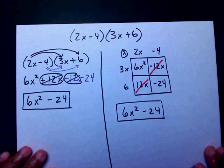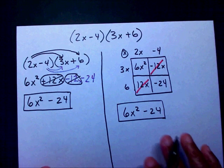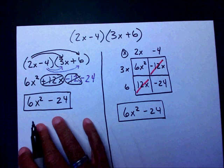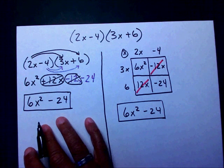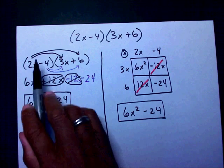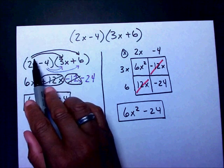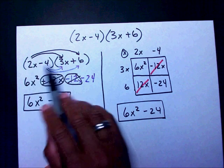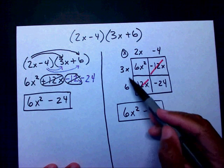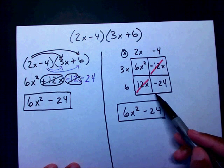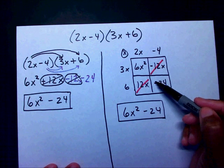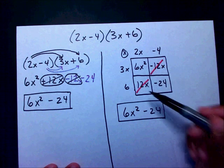I hope you see why I prefer the box method. The other method is great, but it has all these lines that can get confusing. Over here it's nice and neat — everything is organized, and I can really see my numbers clearly in the boxes.